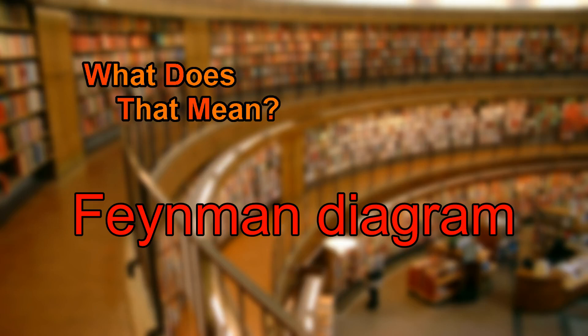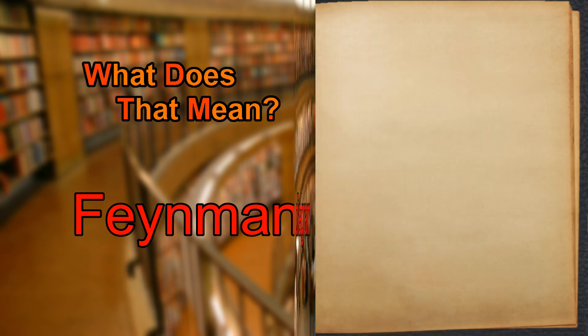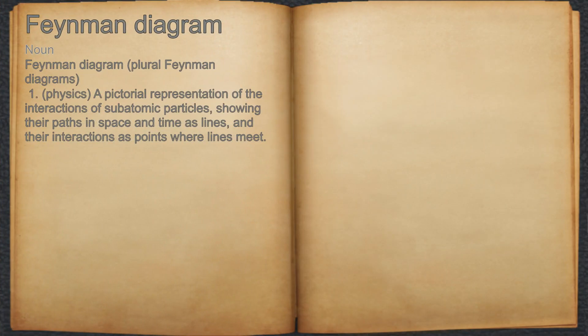What does Feynman diagram mean? Feynman diagram. Noun. 1. A pictorial representation of the interactions of subatomic particles, showing their paths in space and time as lines, and their interactions as points where lines meet.